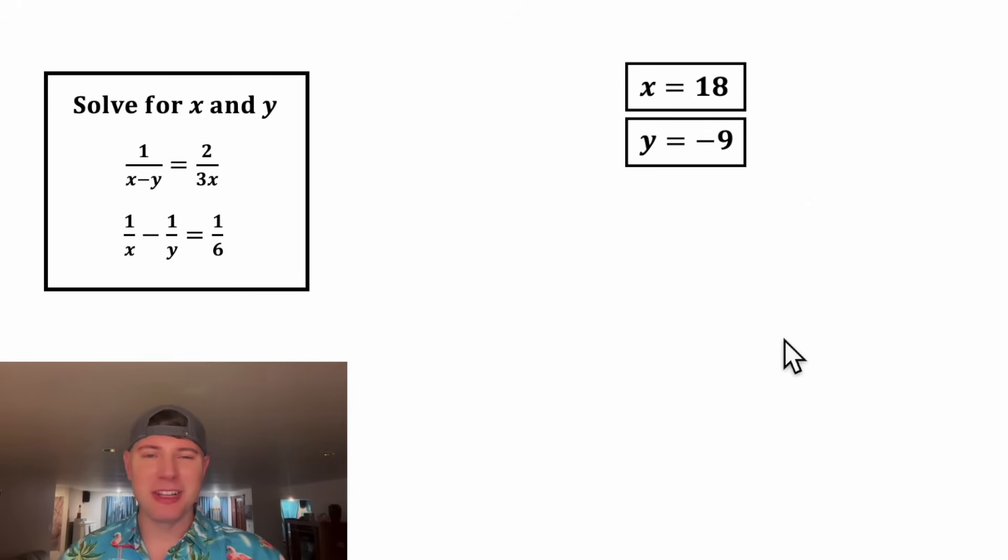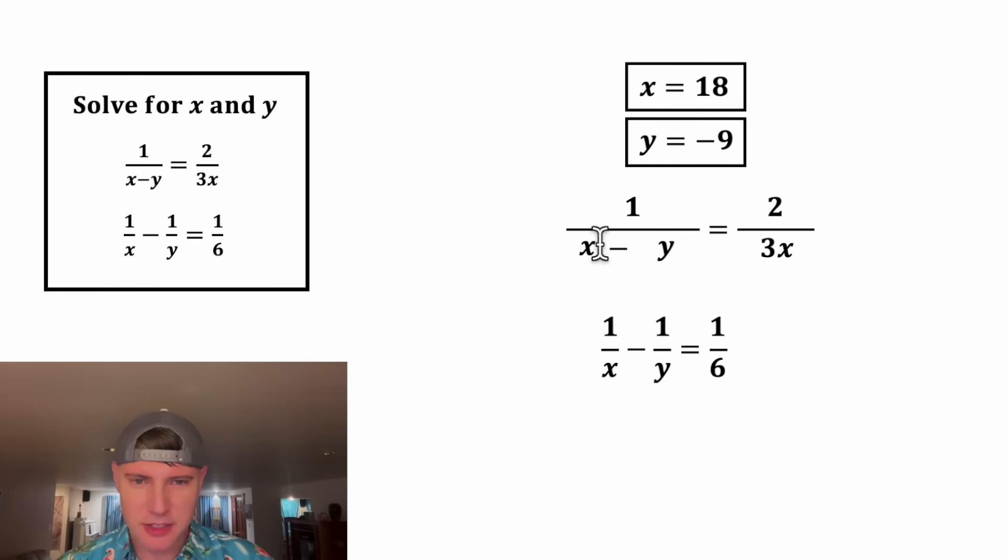We're pretty much done, but let's verify the answers. Let's copy both equations down. In place of x, plug in 18, and in place of y, plug in negative 9. For 18 minus negative 9, that's the same as 18 plus 9, which equals 27. Then 3 times 18 equals 54. Both are divisible by 2, so this simplifies to 1 over 27. It checks out.